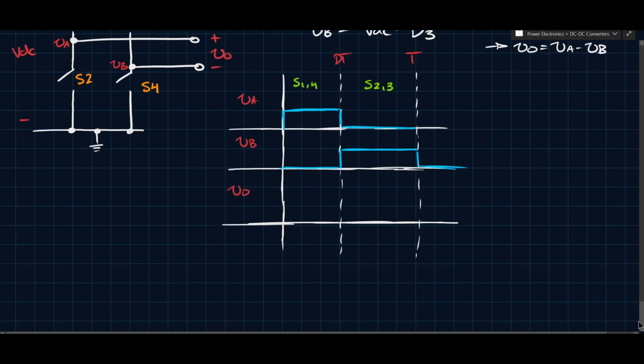And so we can take the difference of these two waveforms. So if this here is VDC, and this is also VDC, then VDC minus zero is VDC. And then zero minus VDC is minus VDC. And remember I called this bipolar switching.